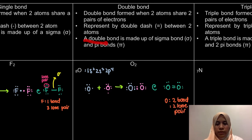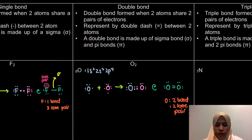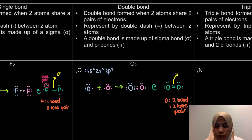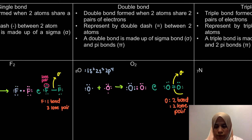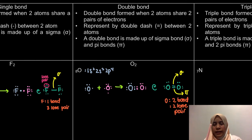A double bond is made up of one sigma bond and one pi bond. For any covalent bond, the first bond will always be a sigma bond, and after that it becomes a pi bond. We'll learn in detail about sigma and pi bonds later in section 4.3.